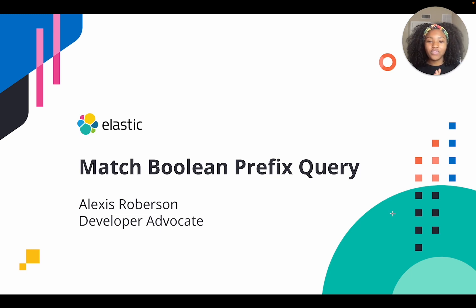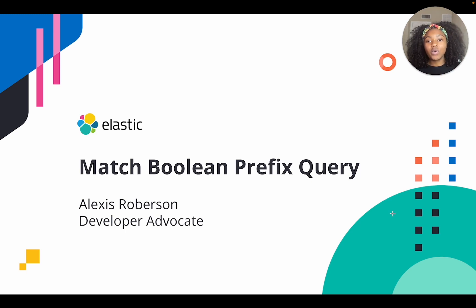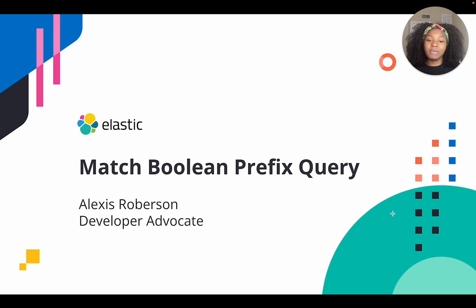In this video, the first thing we'll do is go over an example in Elastic Cloud to get an understanding of the match boolean prefix query and exactly how you run it against your data set. Then we'll go into our whiteboard for further detail about the definition and a few more examples, and then we'll end by running those examples within Elastic Cloud. All right, so without further ado, let's get started.